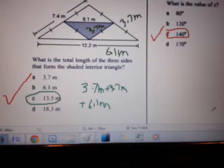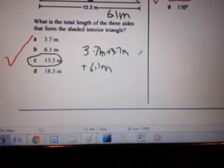This is the same case for each of the triangles in here. So 3.7 meters plus 3.7 meters plus 6.1 meters gives us a final answer of 13.5 meters. Once again, answer C is the answer for question 18.